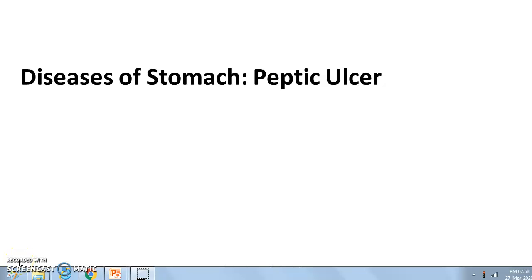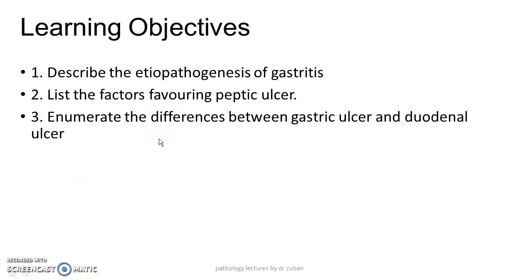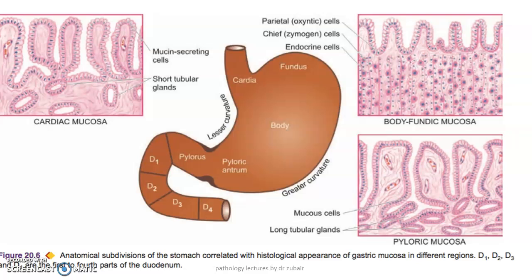Hi, in today's class we will be discussing about diseases of the stomach and in detail about peptic ulcer. Our learning objectives are to describe the etiopathogenesis of gastritis, list the factors favoring peptic ulcer, and enumerate the differences between gastric ulcer and duodenal ulcer.